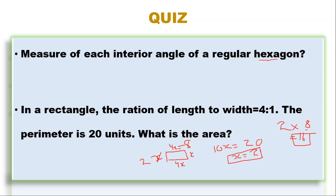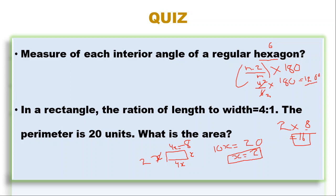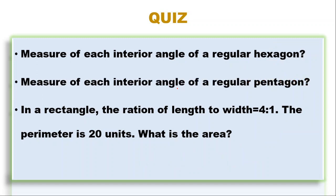Next question: what is the measure of each interior angle of a regular hexagon? A hexagon is a six-sided figure, so n equals 6. Using the formula (n minus 2) divided by n, multiplied by 180, we substitute n equals 6 to get (4 divided by 6) multiplied by 180, which comes out to 120 degrees. So each interior angle of a regular hexagon is 120 degrees.